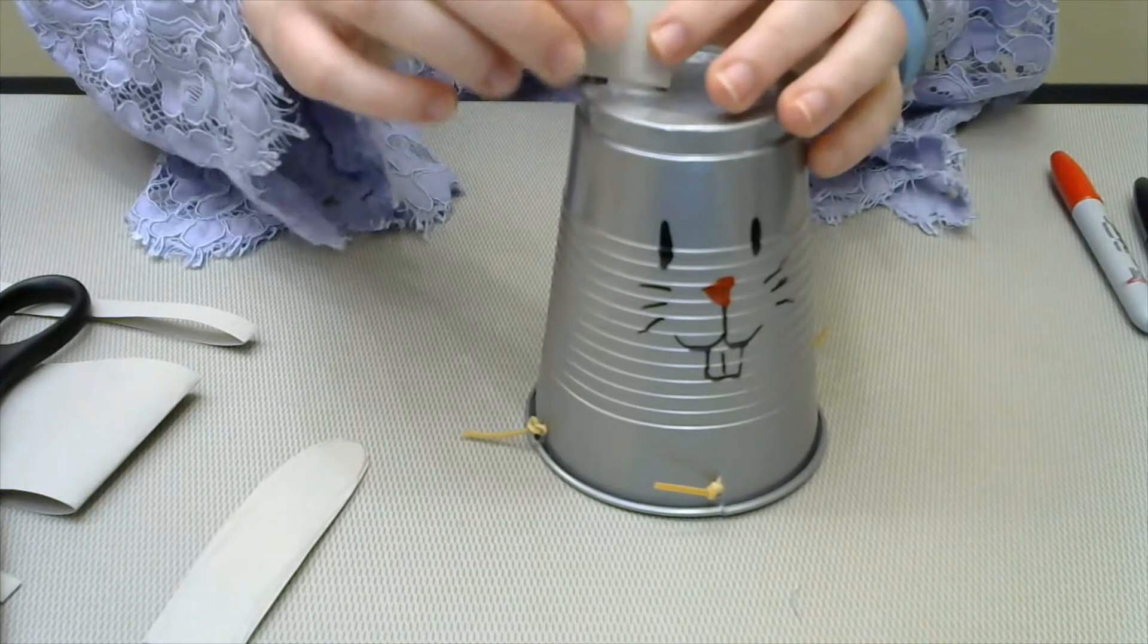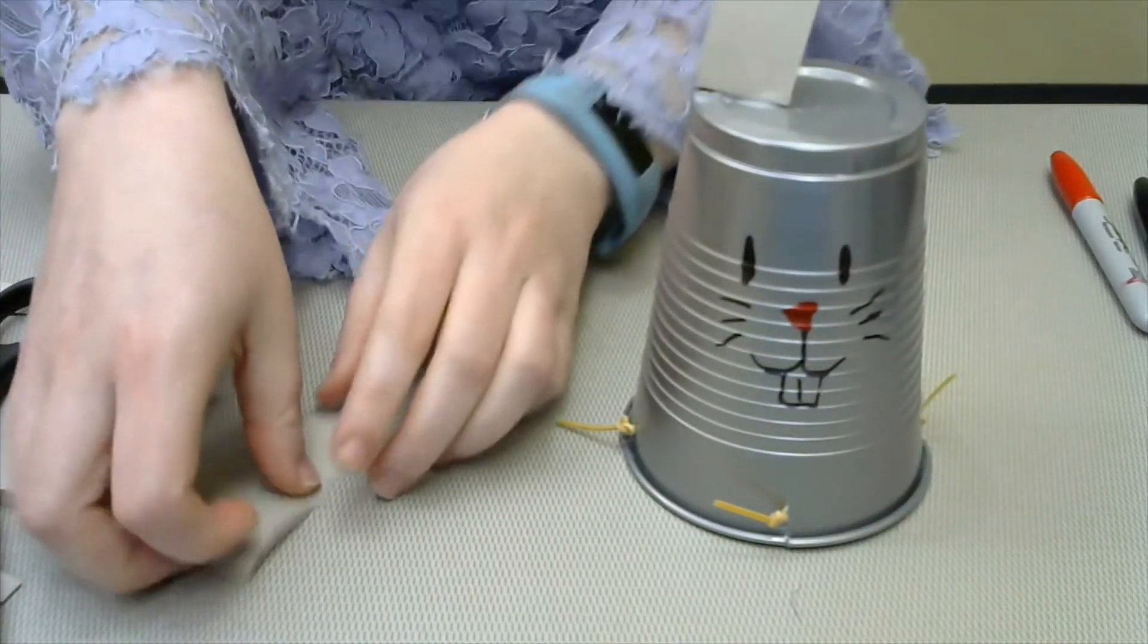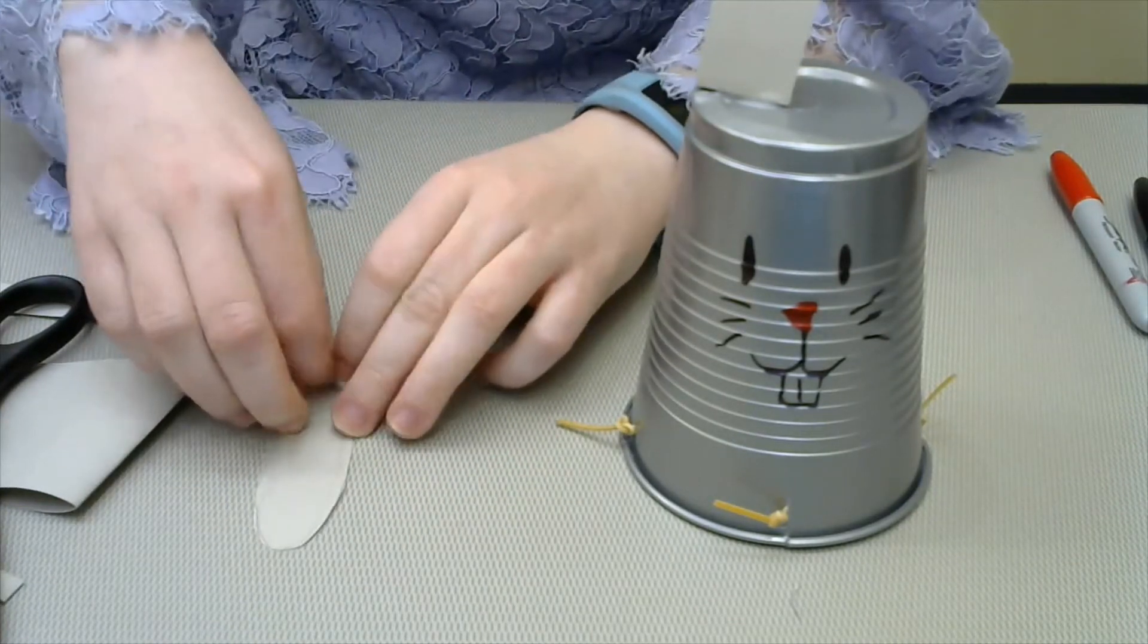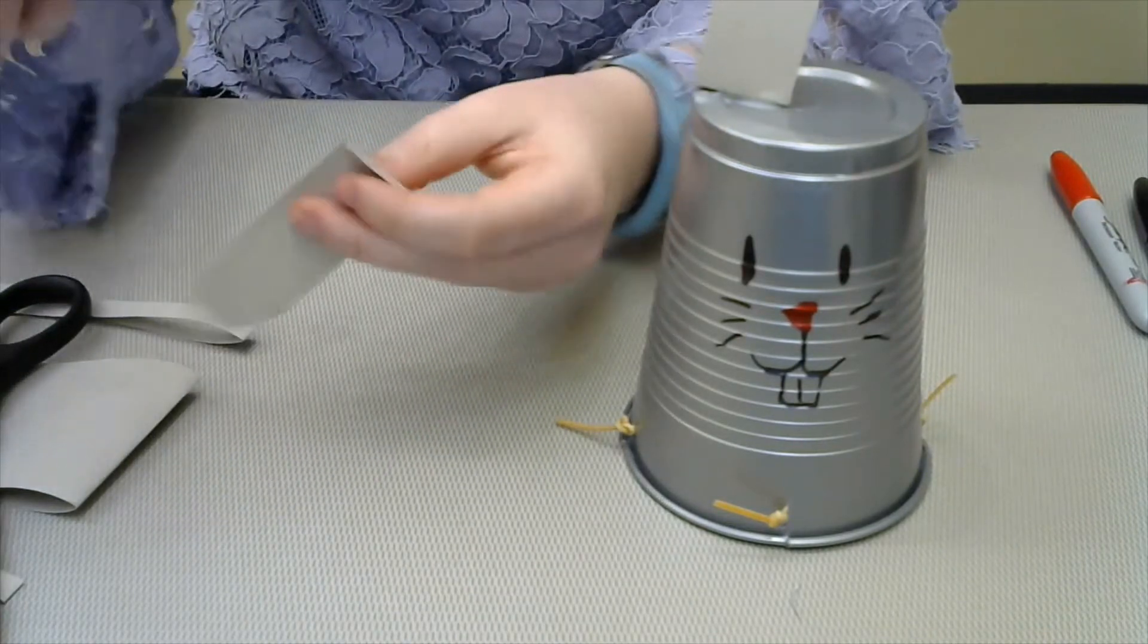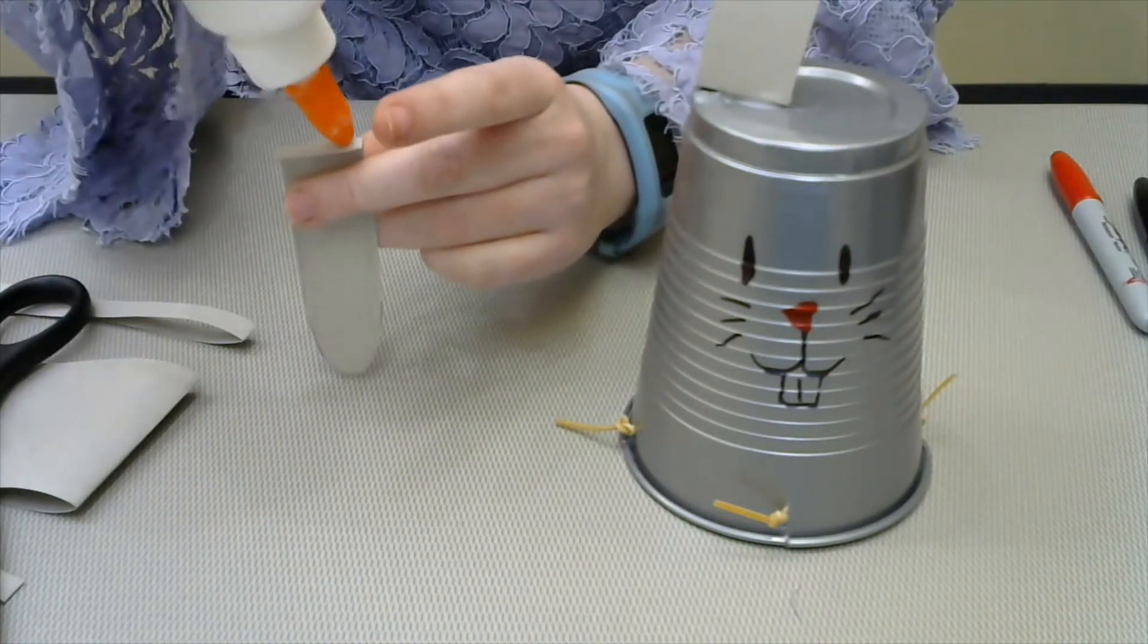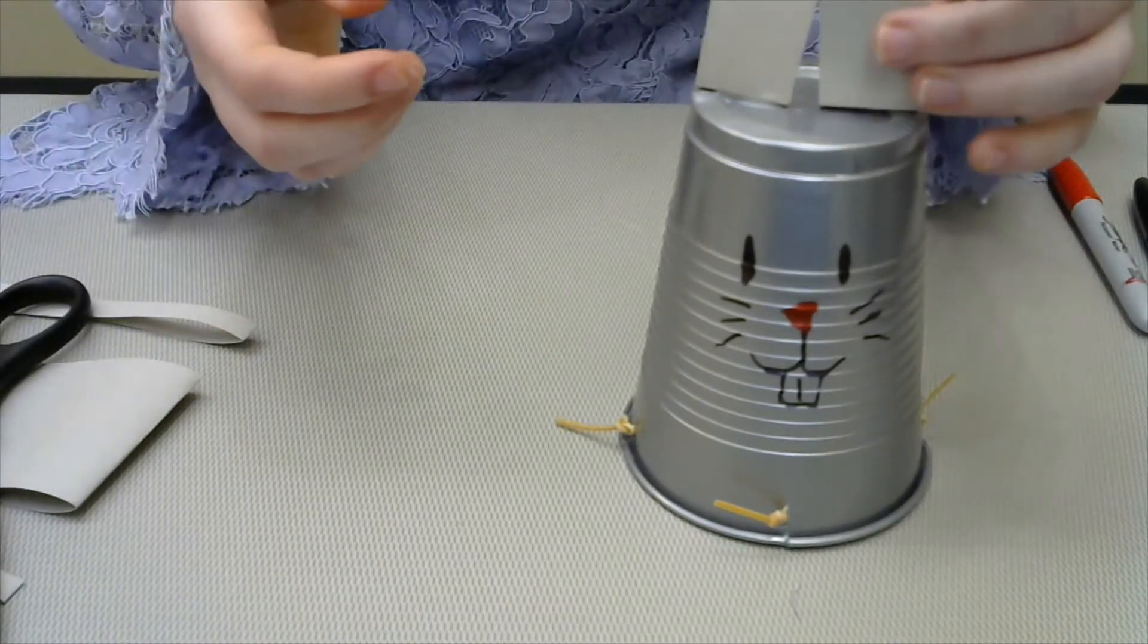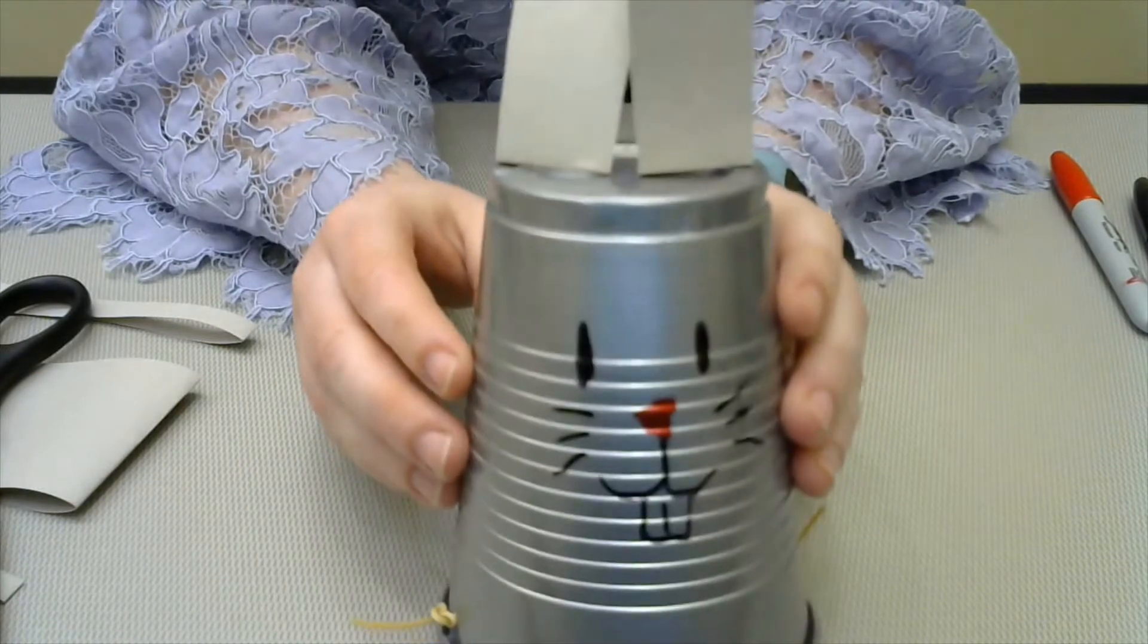Of course, since we're using white glue, it will take a little while for it to dry. So once you have both ears on, you'll have to set them aside and let this guy dry. Just like so. And that'll be your rabbit.